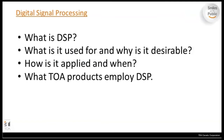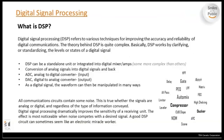How is it applied, when is it applied, and what products employ DSP? Digital signal processing refers to various techniques for improving accuracy and reliability of digital communications. DSP works by clarifying or standardizing levels of digital audio. It can be a standalone unit or, more commonly these days, integrated into digital mixers and amplifiers.